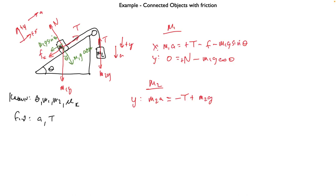We have three equations so far. Our unknown quantities are tension, acceleration, friction, and normal force — four unknowns. If I have four unknowns, I need four equations. So what's the fourth one? The normal force and the coefficient of friction are lurking somewhere — the link between frictional force and normal force.